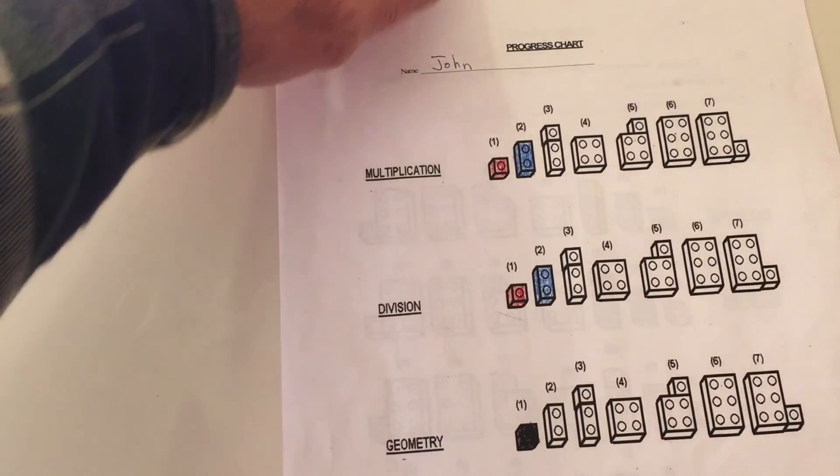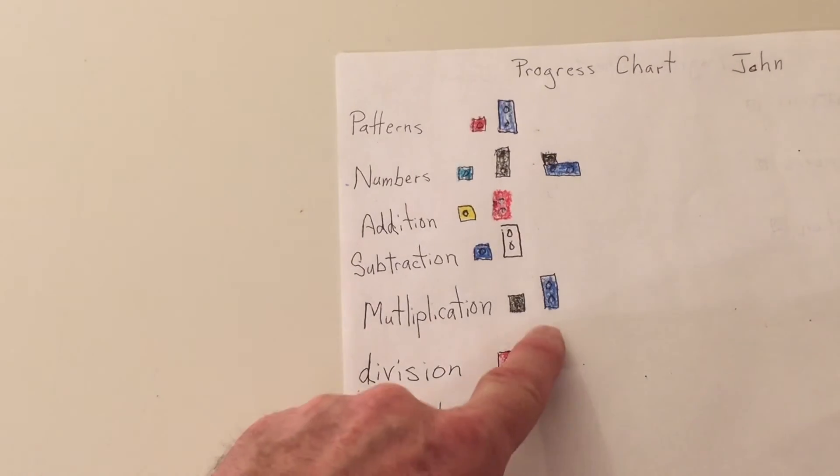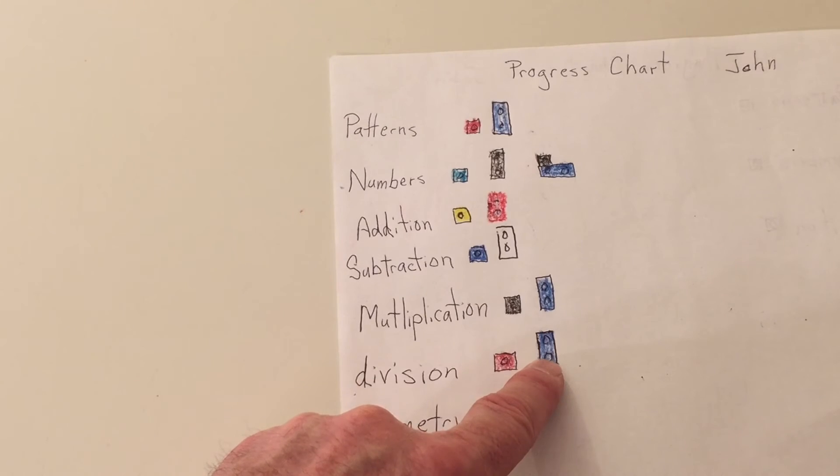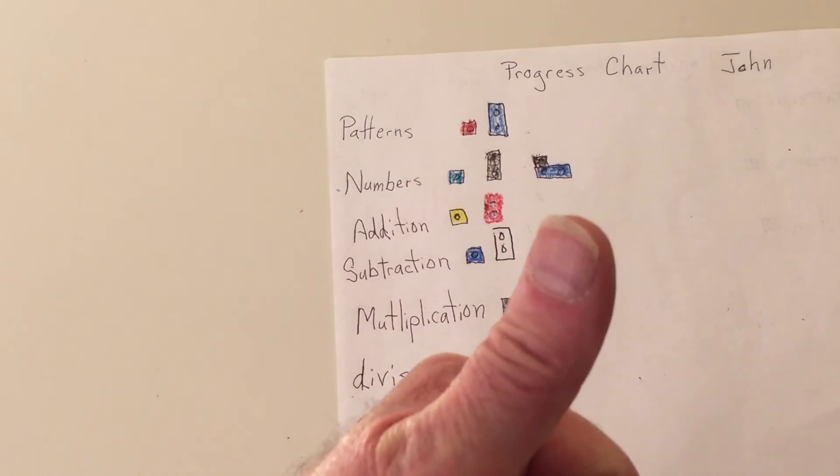Good job. Or if you drew yours on plain paper, I just made a 2-dot block here, colored it blue, and put it in division. So we've done our second activity in division. Nice job.